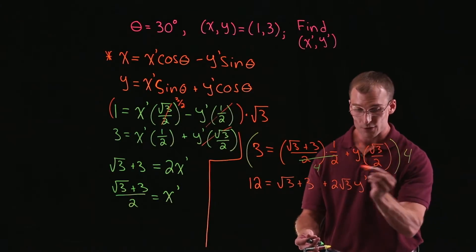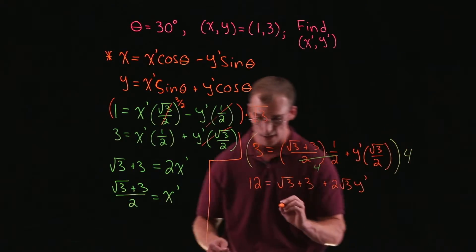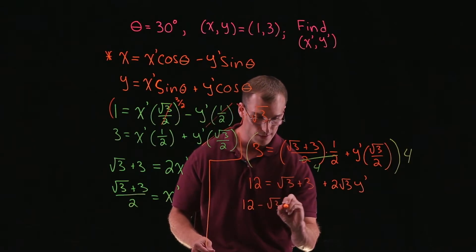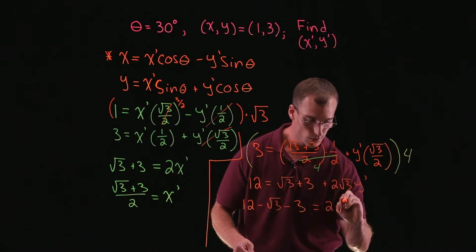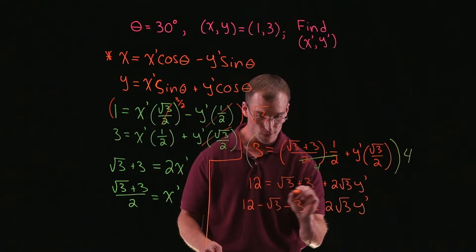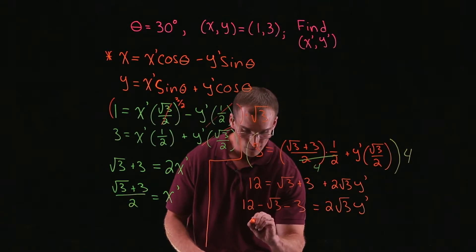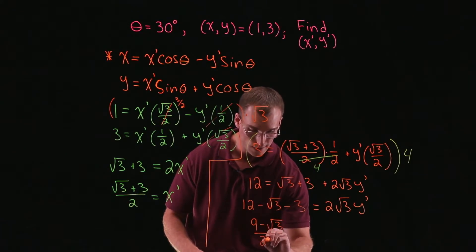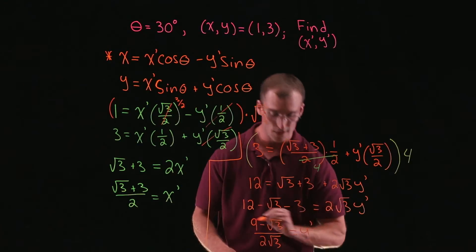Now we have an equation where we can solve for y prime. To isolate that term, we bring everything to the other side: 12 minus root 3 minus 3 equals 2 root 3 y prime. Then 12 minus 3 gives us 9, and dividing through by 2 root 3, we get y prime equals 9 minus root 3 over 2 root 3.